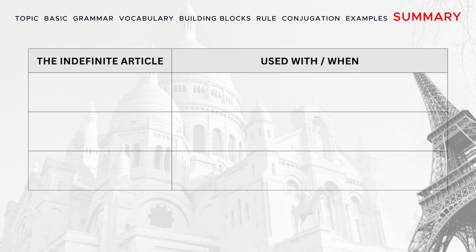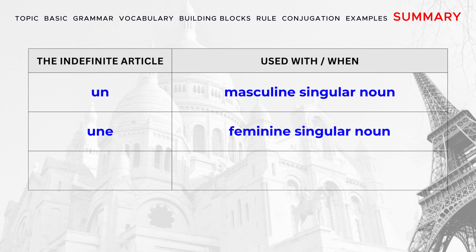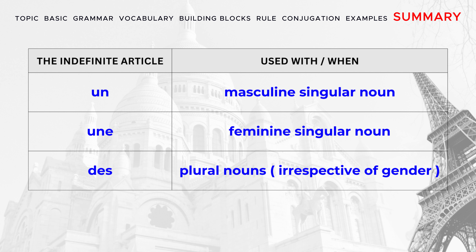Let's repeat one more time. 'Un' — used with the masculine singular noun. 'Une' — used with the feminine singular noun. 'Des' — used with the plural nouns, no matter what the gender is.